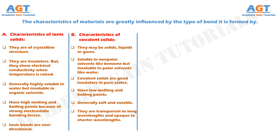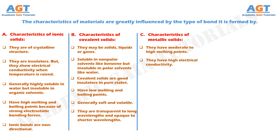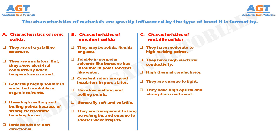Number 3: The characteristics of metallic solids. They have moderate to high melting points. They have high electrical conductivity. They have high thermal conductivity. They are opaque to light. They have a high optical absorption coefficient.